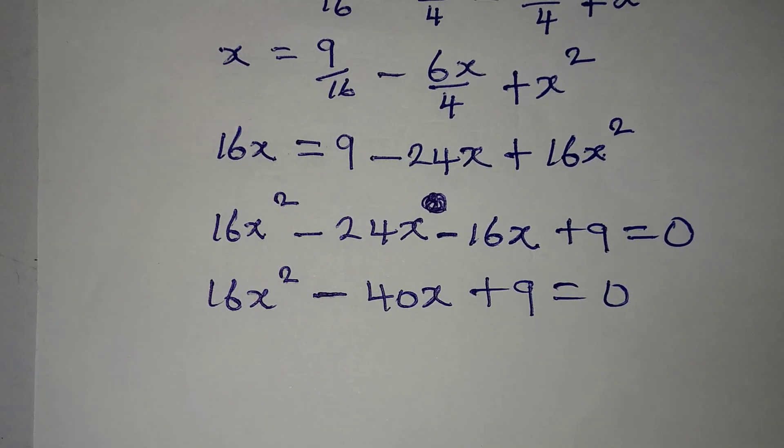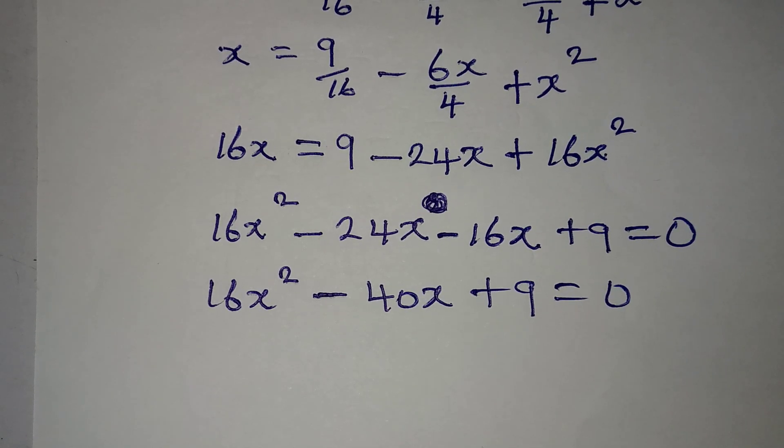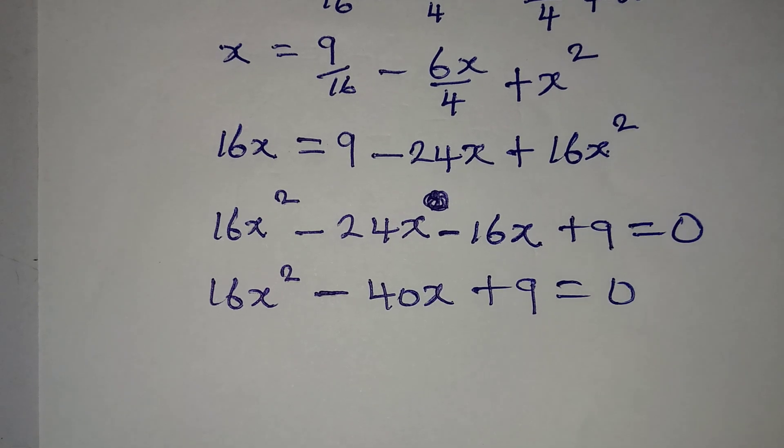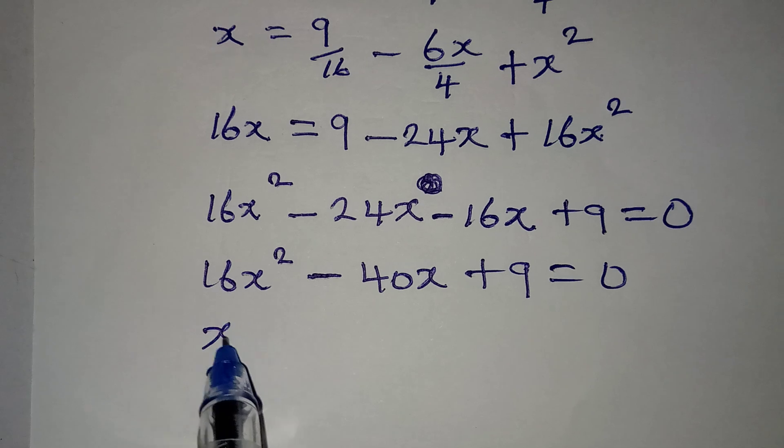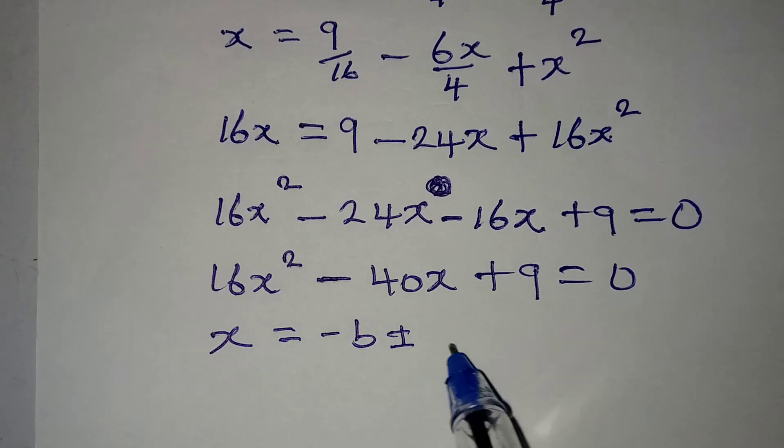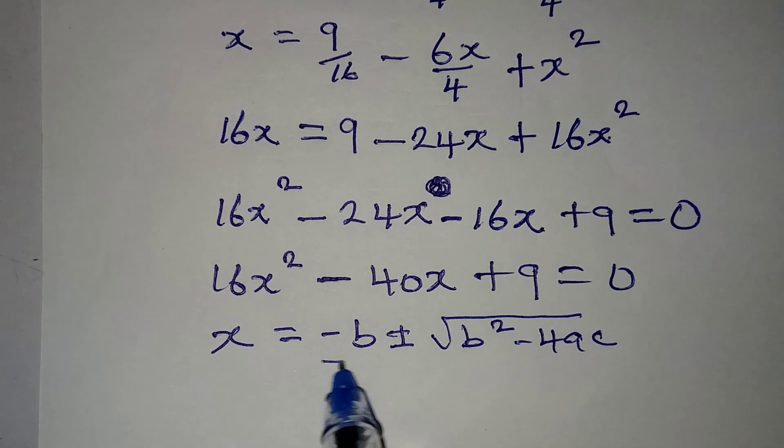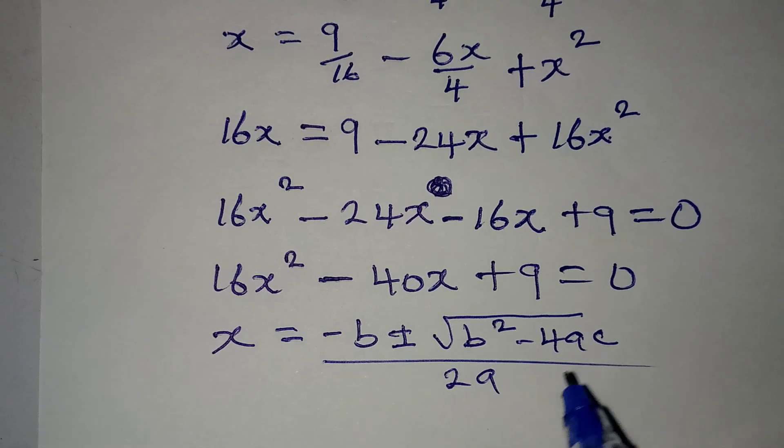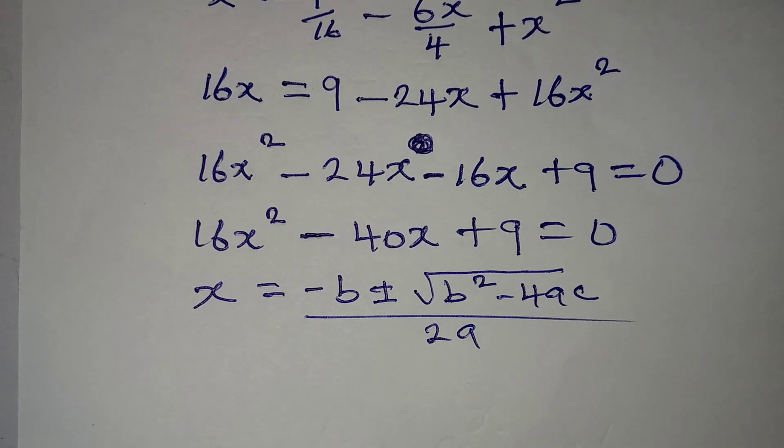And instead of you thinking of how to factorize this, it's better you use the formula method to get it done. Now, if we are using the formula, this is the formula: x is equal to minus b, positive or negative, square root of b squared minus 4ac, and the whole of this is over 2a. Now, let's get our a and substitute.